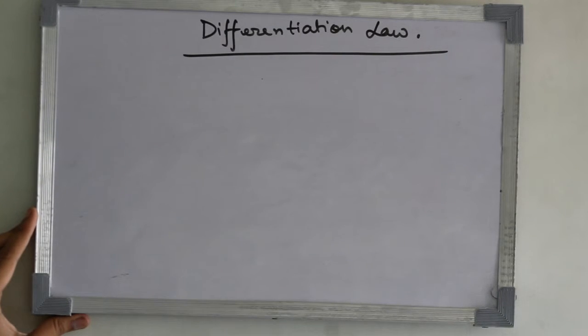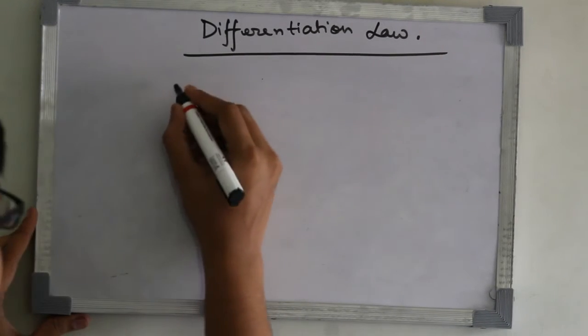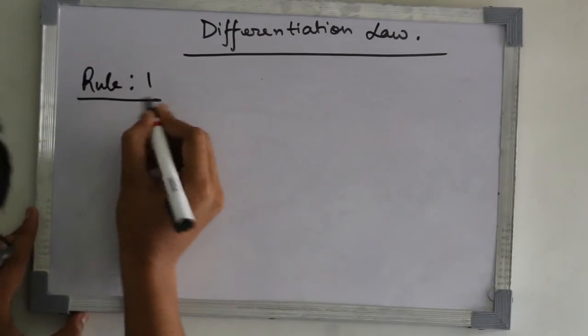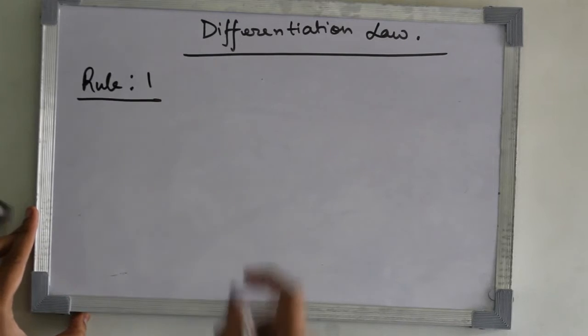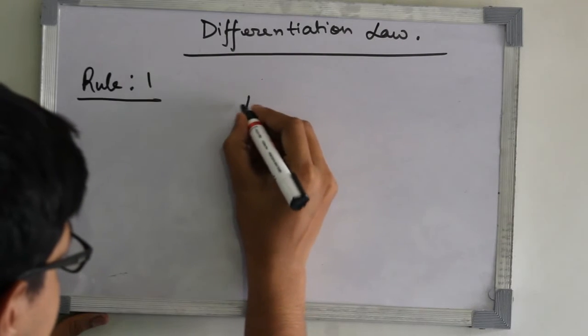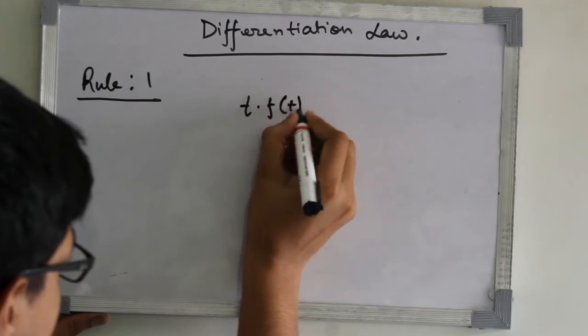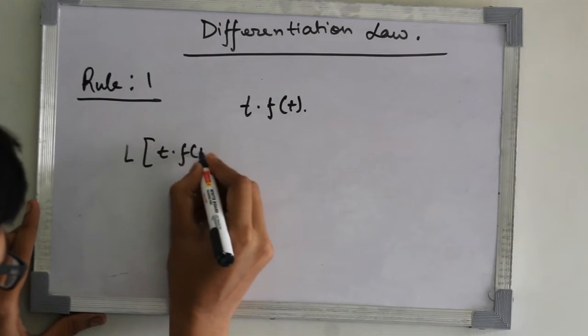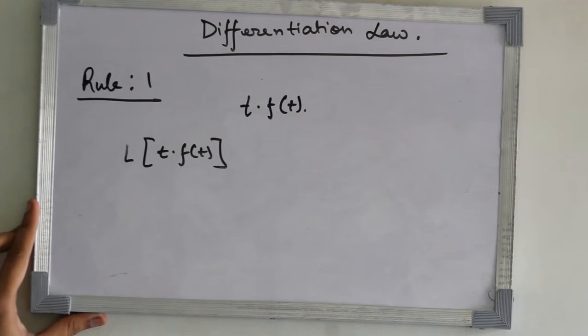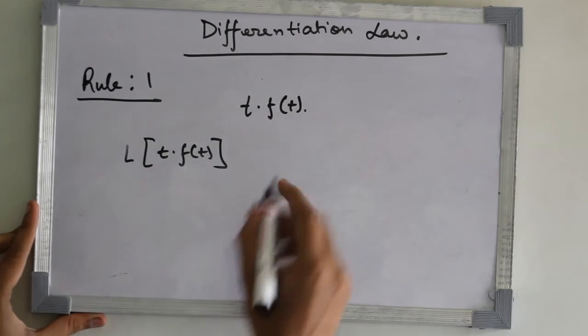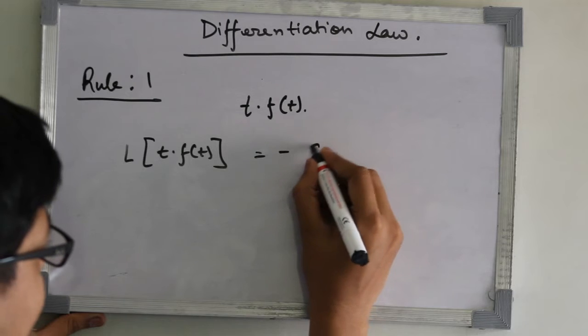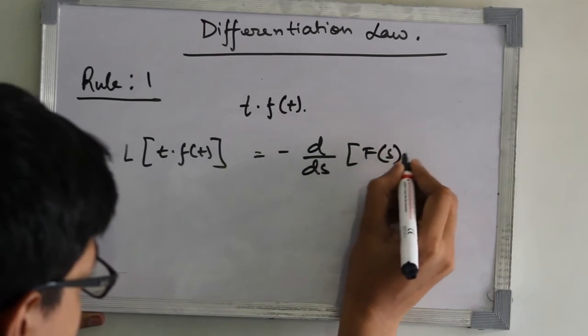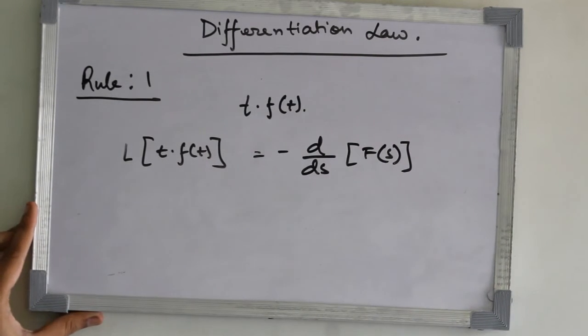Here, let's take a function. This is rule 1 of differentiation law. Let a function is t into f of t. Now, the Laplace transform of this function, t into f of t, this will be equal to minus d/ds of F of s. So, this is rule number 1.